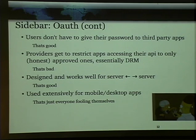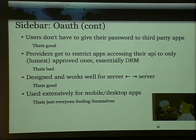Continuing this sidebar: basically users don't have to give their password, and that's really good. Providers get to restrict app access as they want. But it's essentially DRM for apps and we're not really seeing it framed in that kind of context. I don't get to choose the app I want to access your API — you get to choose the apps you allow. I think that's somewhat limiting, and we're already seeing some social companies restricting third-party apps they're allowing use from, some for very good reasons, some for not so good reasons.